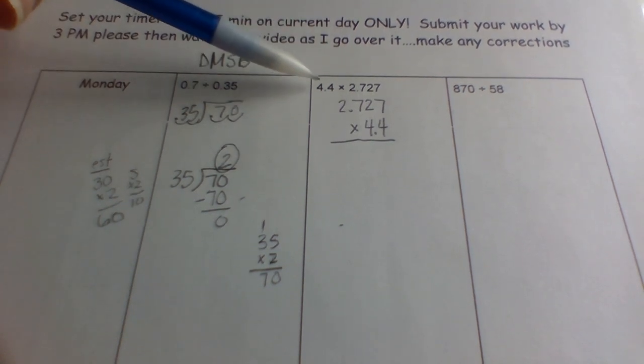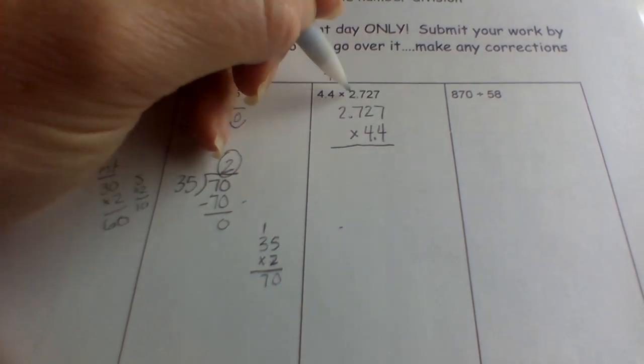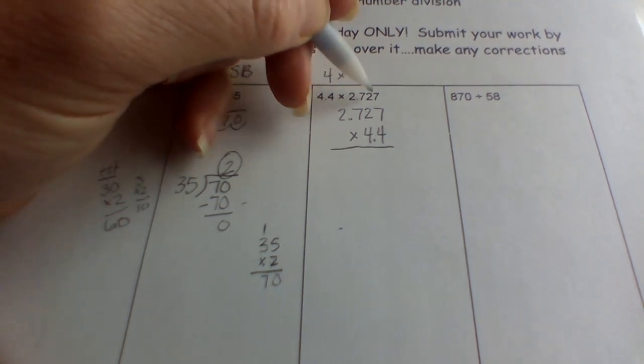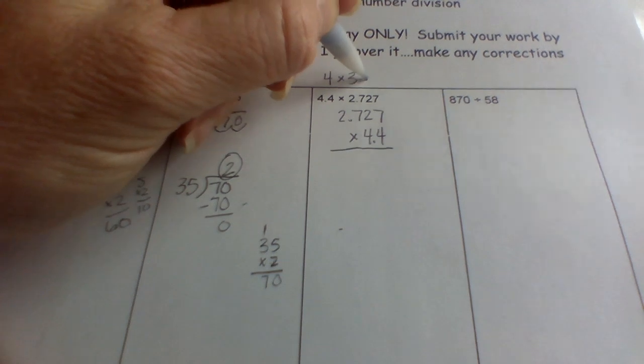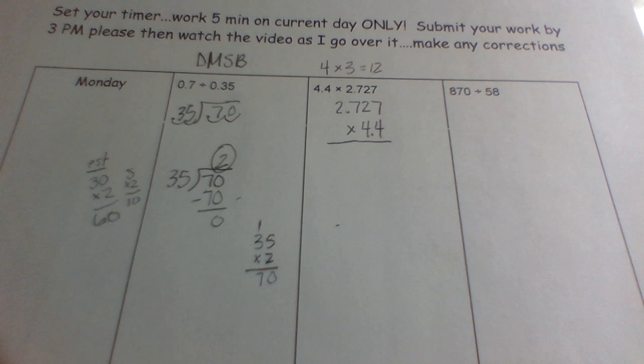4.4 is closest to, I hope you got it, is closest to four. And I'm going around two, and seven hundred twenty-seven thousandths is closer to making this closer to three, right? So four times three. So my final answer should be somewhere around 12. So let's take a look, right?